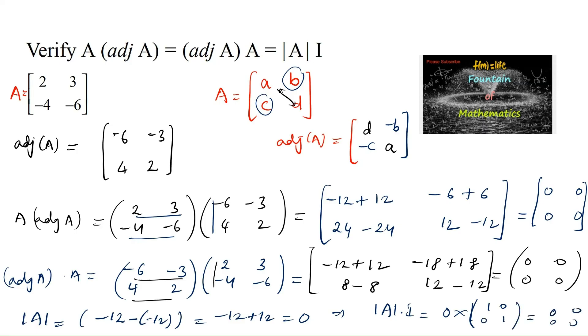So we can verify that A times adjoint of A and adjoint of A times A are both equal to det(A) times I for the matrix A = [[2, 3], [-4, -6]].